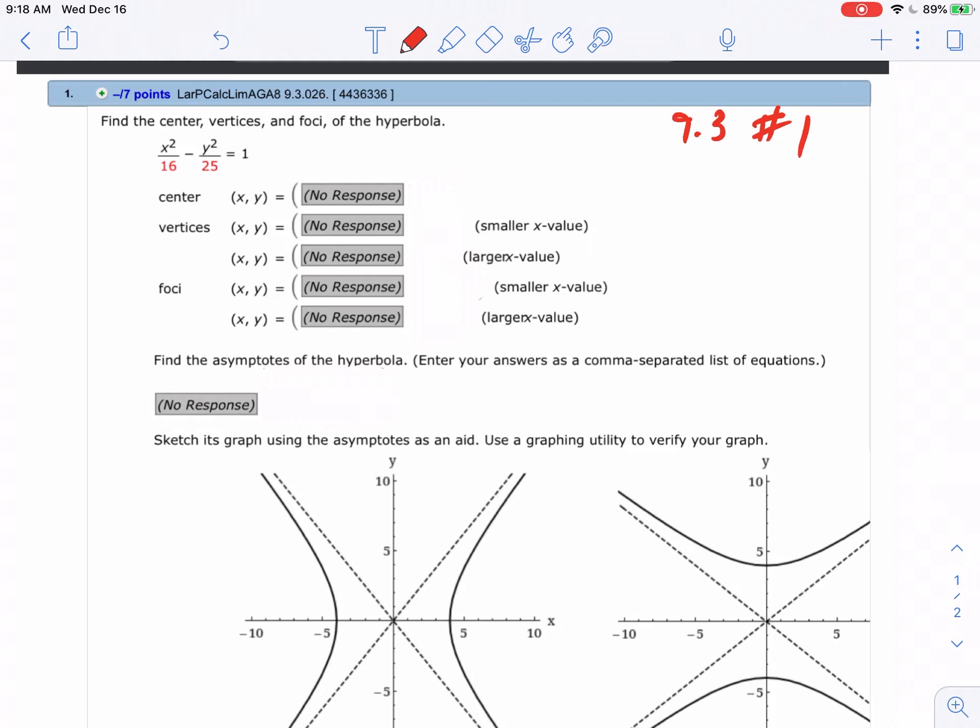Okay, so this is the first of the hyperbola assignment and you can see they gave us a standard form of the hyperbola. I know this because one of them is positive, one of them is negative. With hyperbola, the big thing is what's written first - the positive term should always be written first. In this case, because x is written first, we're going to end up with a sideways hyperbola.